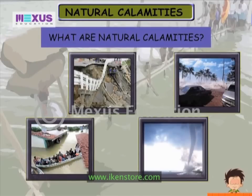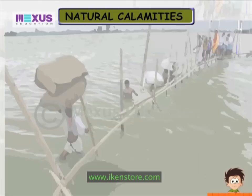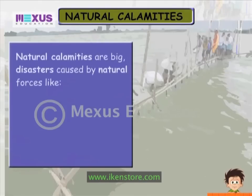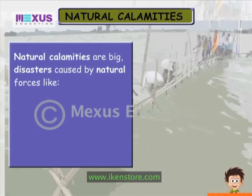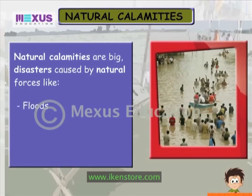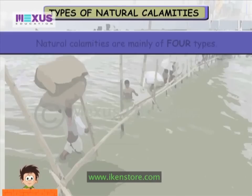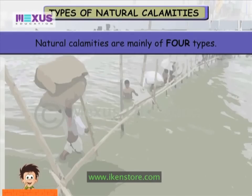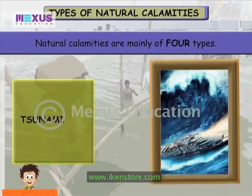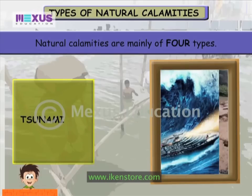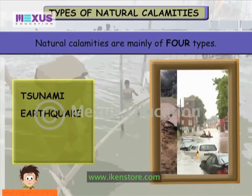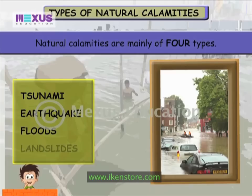What are Natural Calamities? Natural Calamities are big disasters caused by natural forces like floods, cyclones or earthquakes. Natural Calamities are mainly of four types: a tsunami, an earthquake, floods and landslides.